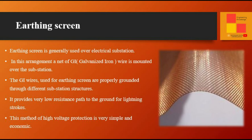Earthing screen is generally used over electrical substations. In this arrangement, a net of GI (galvanized iron) wire is mounted over the substation. The GI wires used for the earthing screen are properly grounded through different substation structures. It provides a very low resistance path to the ground for lightning strokes. This method of high voltage protection is very simple and economical.